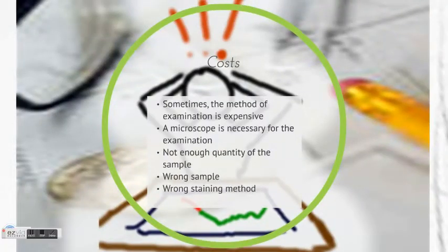We also have the cost. Sometimes the method or examination is expensive. A microscope is necessary for the examination. Sometimes you cannot have enough quantity of the sample, or you can take the wrong sample.